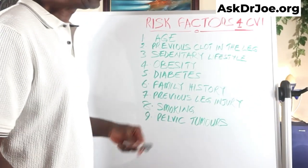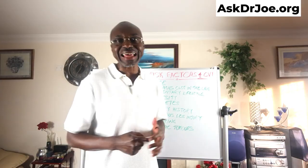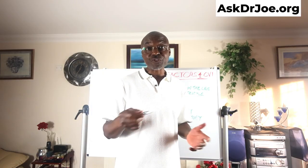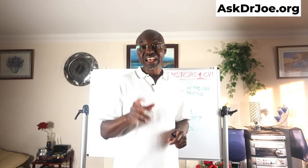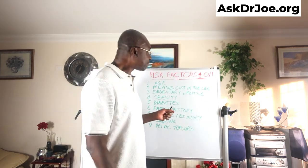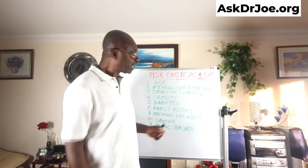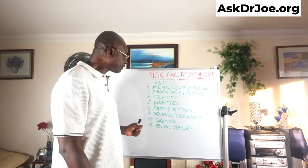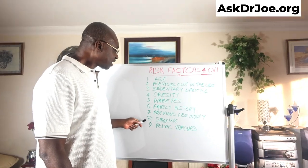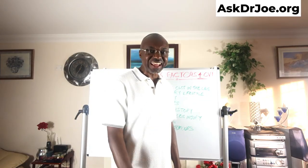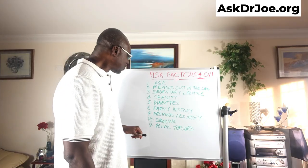Number seven is previous leg injury. Any trauma to the leg — if the trauma affected the veins, then the structural integrity of that vein is also going to be affected. In future, that will affect the ability of the vein to drain, depending on how many veins were damaged, and that raises your risk. Number eight is smoking. Smoking, just like diabetes, damages blood vessels, and that includes the veins.